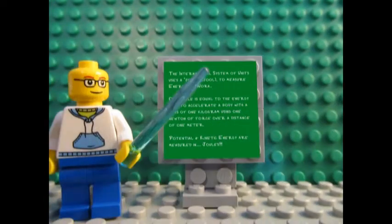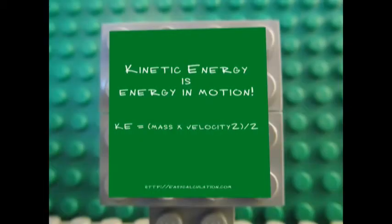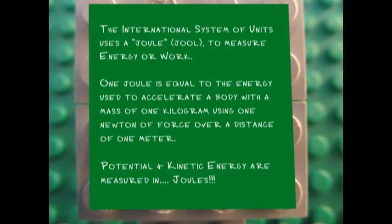First, here are some definitions. Potential energy is known as stored energy, where kinetic energy is energy in motion. The international system of units uses a joule to measure energy or work. One joule is equal to the energy used to accelerate a body with a mass of one kilogram using one newton of force over a distance of one meter. Potential and kinetic energy are measured in joules.